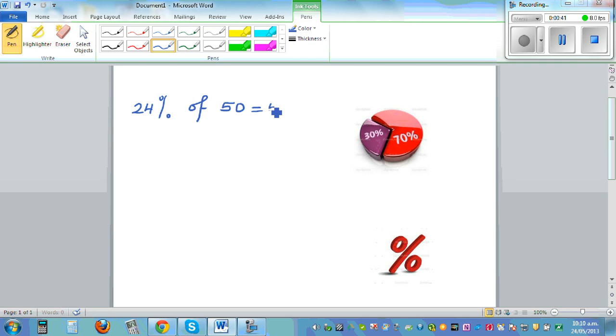She found this difficult, so she said that should be equal to 50% of 24. I thought, well, I'm not sure, let's check that out. If 24% of 50 is the same as 50% of 24, let me do this first. How would you find 24% without a calculator?